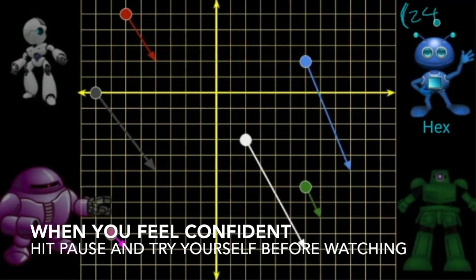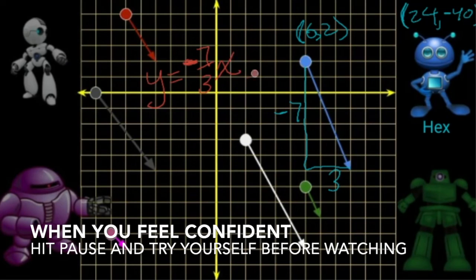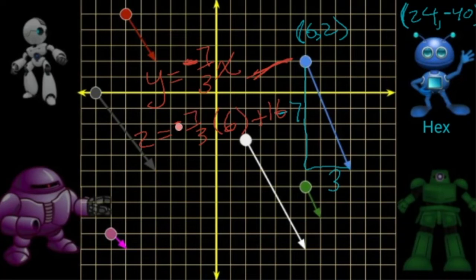Again, our target is 24, negative 40. Hex starts at 6, 2 with a slope of negative 7 over 3. When x is 6, we want y to be 2. Negative 7 thirds times 6 is negative 14. We need to add 16 to compensate.